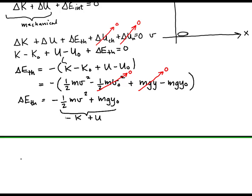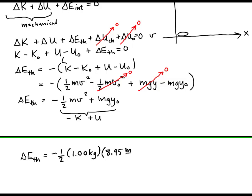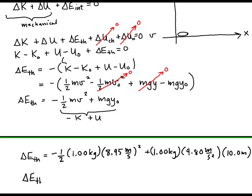Plugging in numbers: minus one-half times 1 kilogram times (8.95 meters per second) squared, plus the mass times the free-fall acceleration of gravity times the initial height of the ball. Entering this into the calculator, the change of thermal energy equals 57.9 joules. So 57.9 joules of thermal energy are added to the system as a result of deforming the ball upon its collision with the ground.